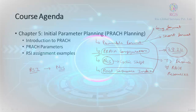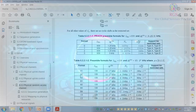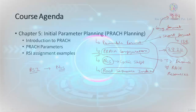Long formats are the ones where the root sequence indexes are 839. Short formats are those where the root sequence indexes are 139. So 839 and 139 — these belong to the root sequence indexes for long formats and short formats respectively.